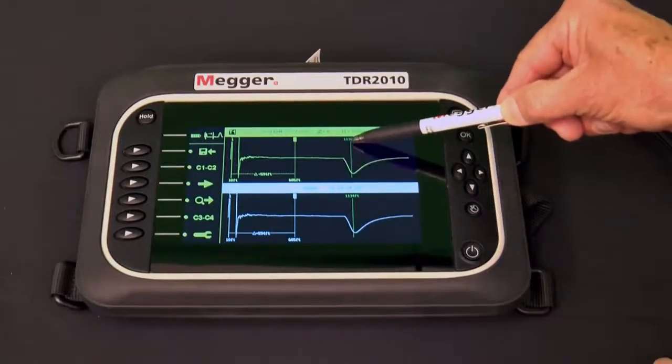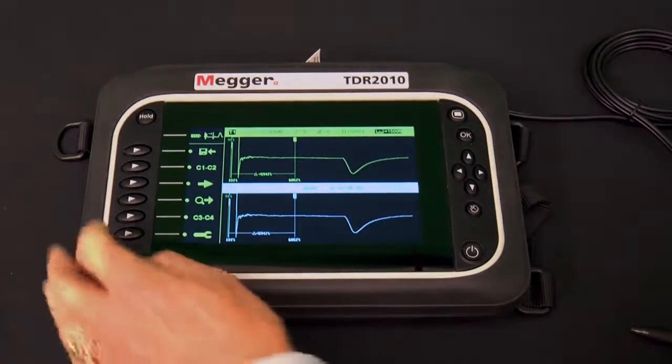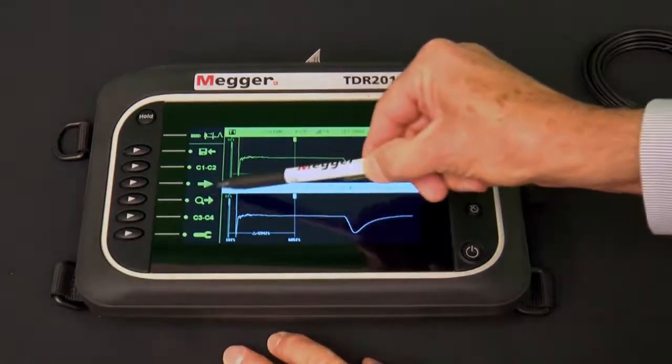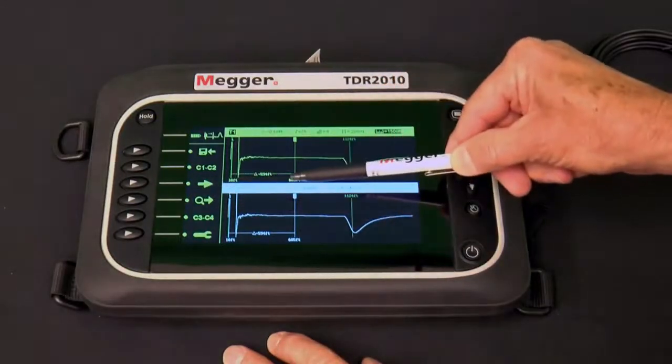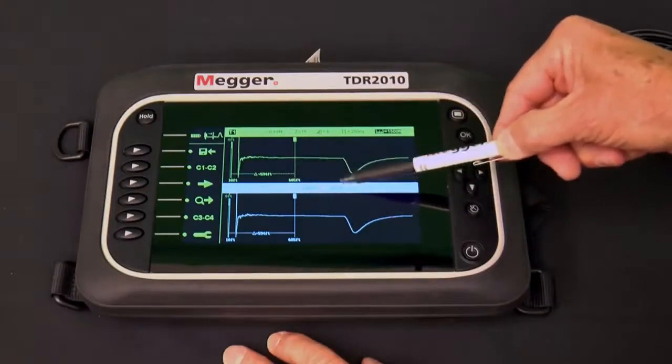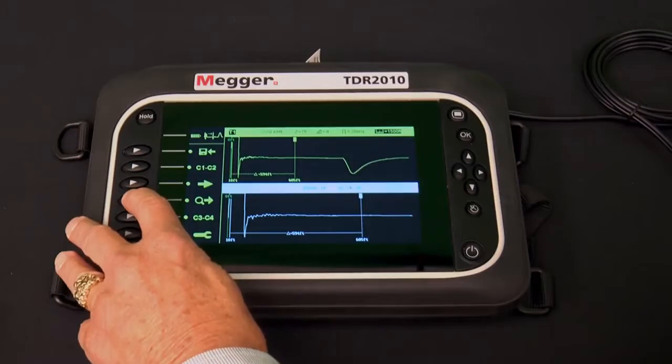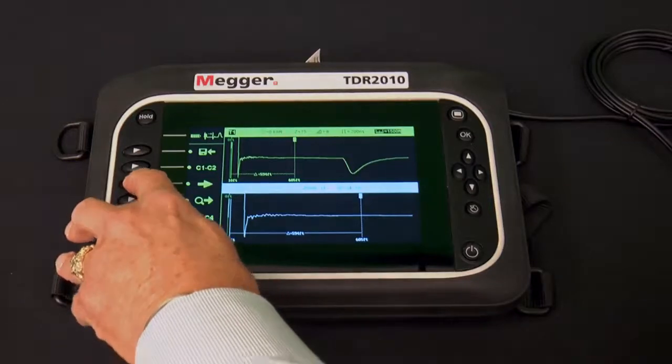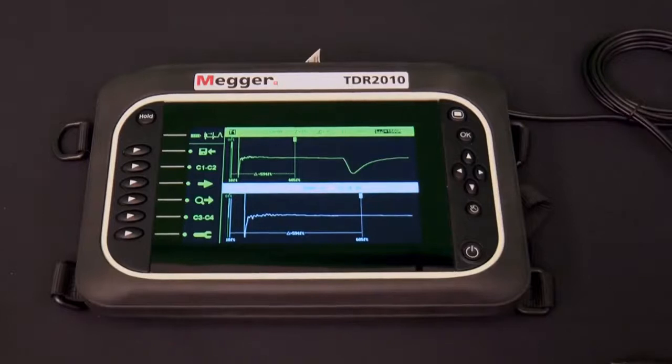The distance to that event is displayed at the top of that new cursor. The expert icon now changes to a large solid right pointing arrow. Note that the inactive trace has been replaced with a zoom trace of the active trace. Additional presses of the expert soft key will cause this new cursor to move to additional events that are further along the cable under test. Press the back key to exit the expert function.